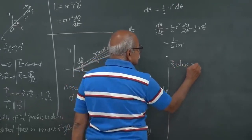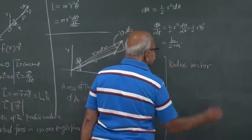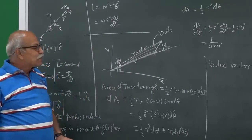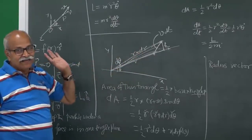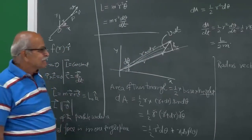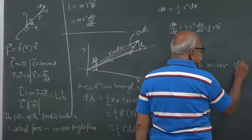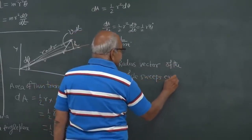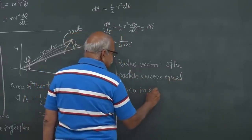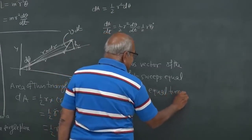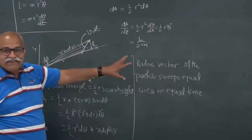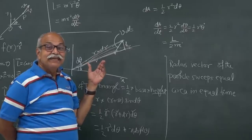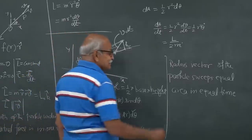The radius vector here is the position vector from the origin to the particle — there need not be a circle. The radius vector of the particle sweeps equal area in equal time. This may sound familiar — it is Kepler's second law.